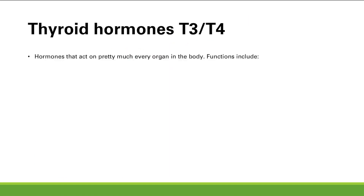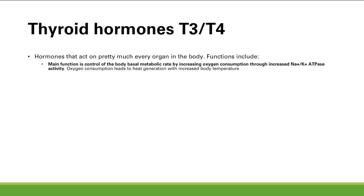The thyroid hormone acts on pretty much every organ in the body — made in the thyroid, goes into the blood, acts everywhere. The very main function is control of the body's basal metabolic rate. It does this by increasing oxygen consumption and energy consumption via increased sodium-potassium ATPase activity — you use up ATP, then replenish it through oxidative phosphorylation, consuming oxygen. All this leads to heat generation and increased body temperature.